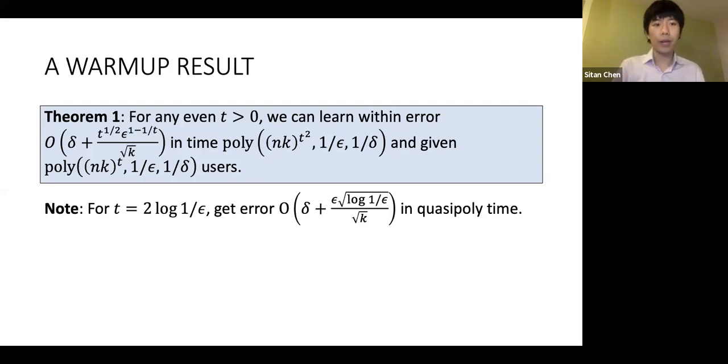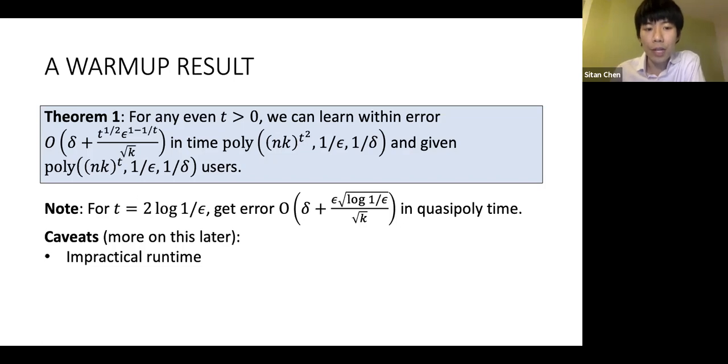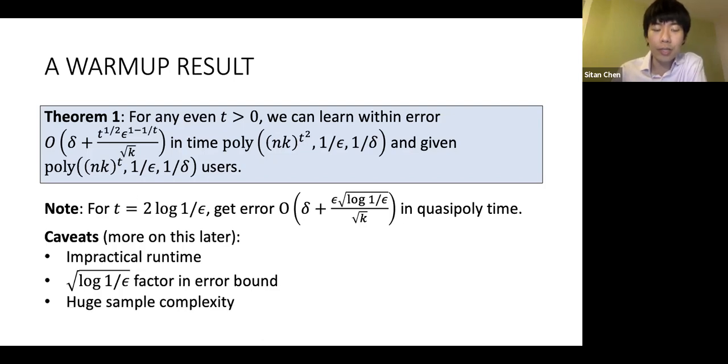In particular, for this choice of t, I end up running in quasi-polynomial in 1/ε time. Some caveats: obviously this runtime is quite impractical, but I'll say more about this at the end. There's the extra √log(1/ε) factor, and additionally the sample complexity is prohibitive.